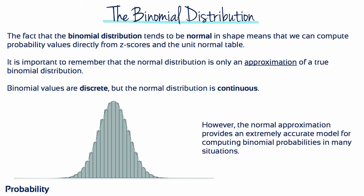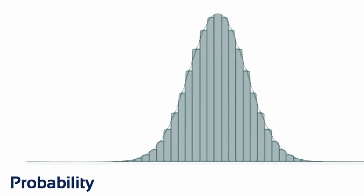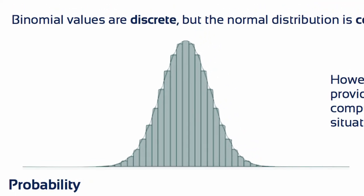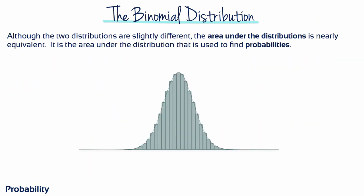It's important to remember that the normal distribution is only an approximation of a true binomial distribution. Binomial values are discrete, but the normal distribution is continuous. However, the normal approximation provides an extremely accurate model for computing binomial probabilities in many situations. This figure shows the difference between the binomial distribution, which is always a discrete histogram, and the normal distribution, which is a continuous smooth curve. Although the two distributions are slightly different, the area under the distributions is nearly equivalent, and it is this area that is used to find probabilities.